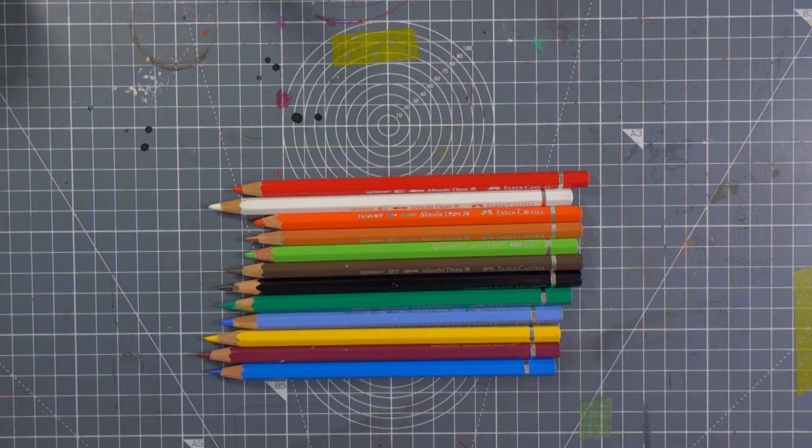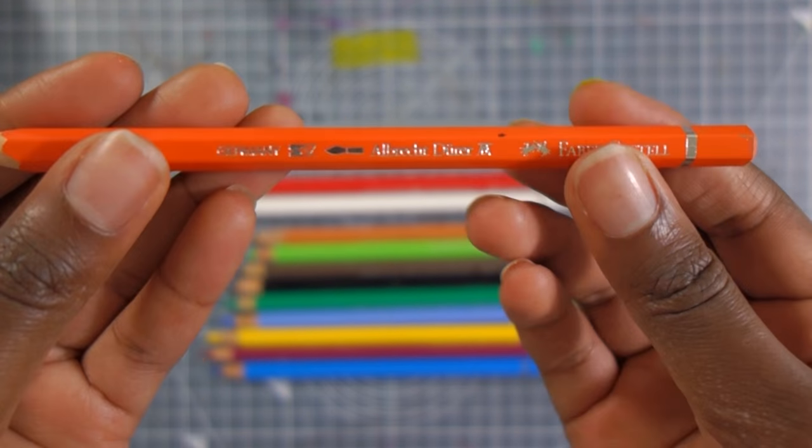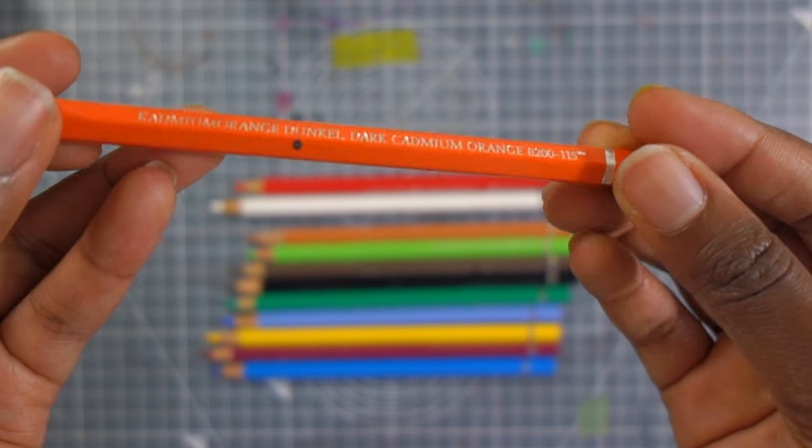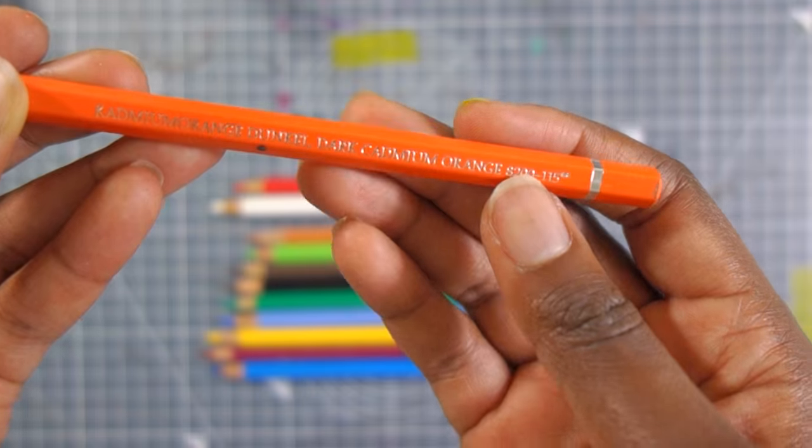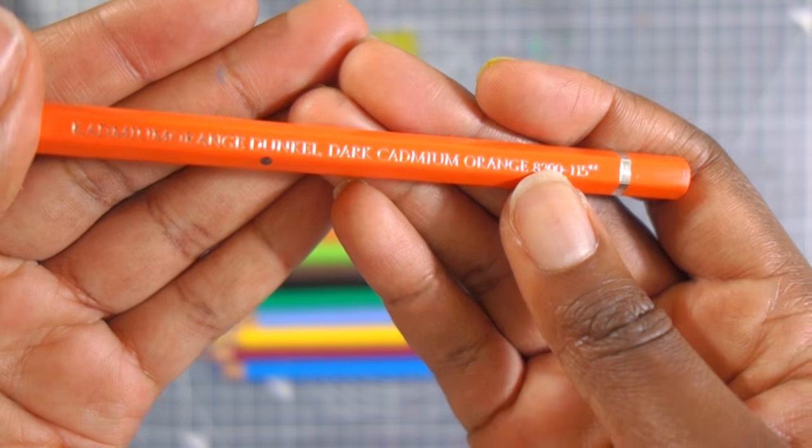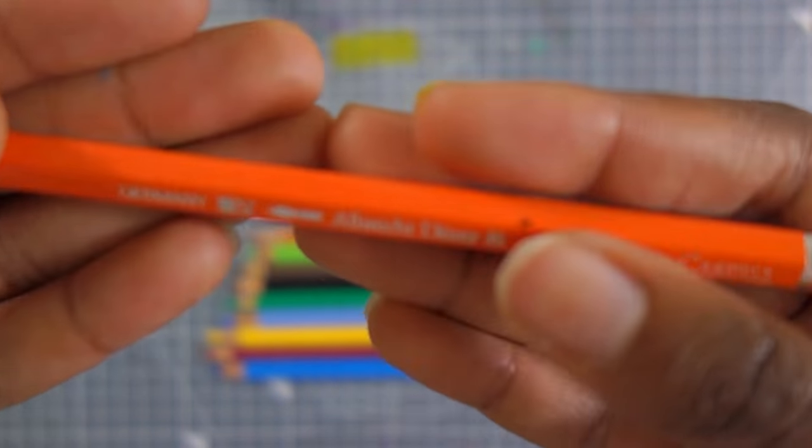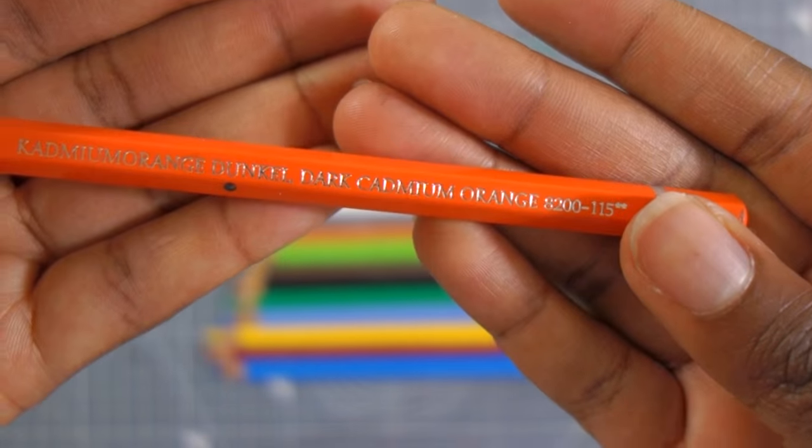So this is what the pencils look like. They say made in Germany. They have a little symbol so that you know that they are watercolor pencils, that little brush there. They say Albrecht Dürer which is the brand name, and if you turn them around you'll see the name of the color in German as well as English plus the color number and lightfastness rating.